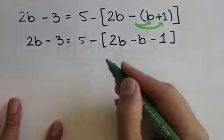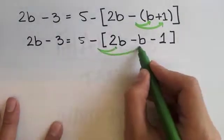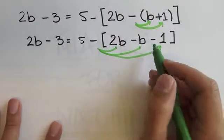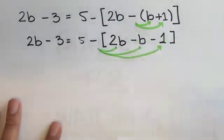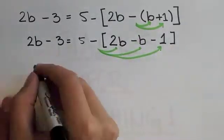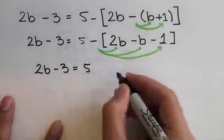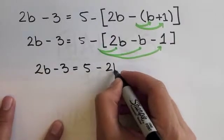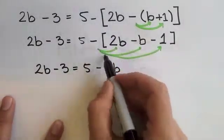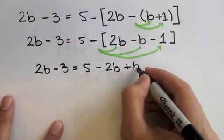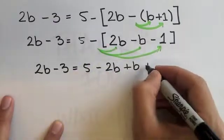Now, as a second step, you want to perform the distributive property again, but over the bracket, just because you have already solved the first one. Now, we copy the left side again, and here we have 5 minus 2b, the first multiplication. The second one gives you positive b, and the third one gives you positive 1.